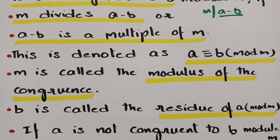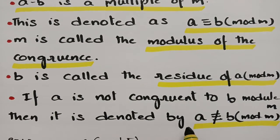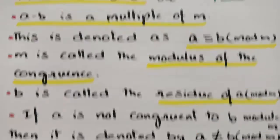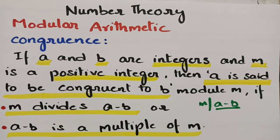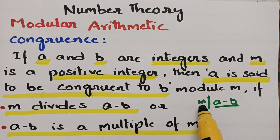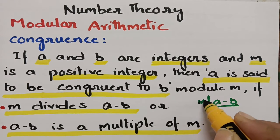If A is not congruent to B mod M, then it is denoted by A ≢ B (mod M). So to remember: A and B are two integers, M is a positive integer, and A is said to be congruent to B if M divides A minus B.